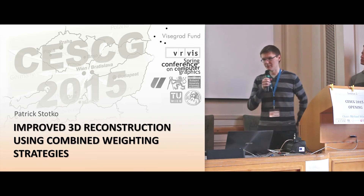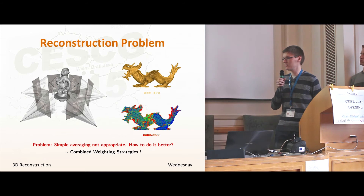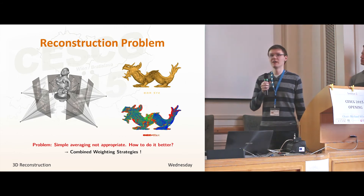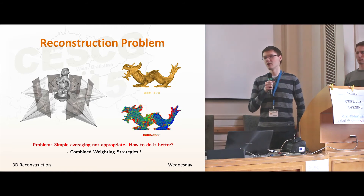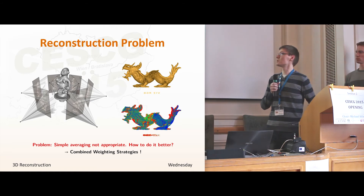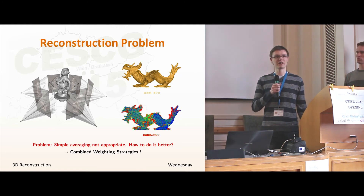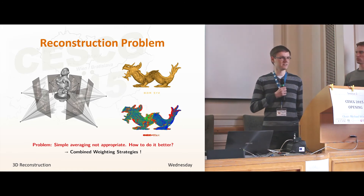My name is Daniel Schrotko and I am going to talk about point cloud reconstruction using probabilistic weighting strategies. Typically in such reconstruction you have an object and you want to get a 3D model by scanning around it. If you simply average all the scans, you end up with a reconstruction full of artefacts. To overcome this, we introduce combined weighting strategies.